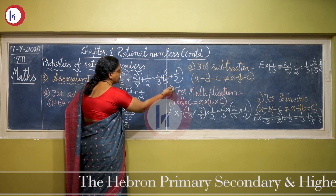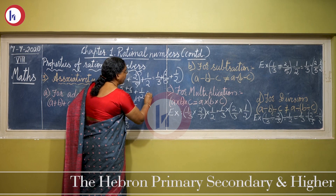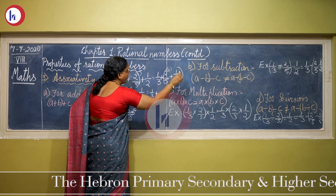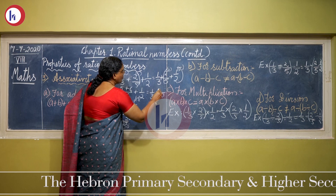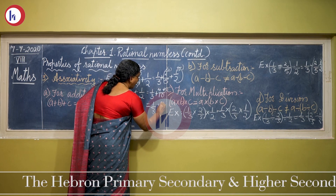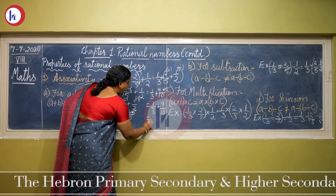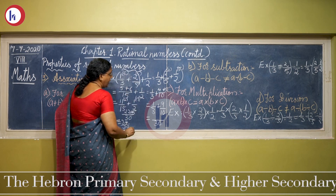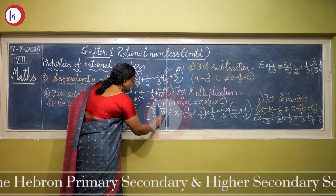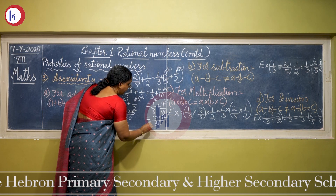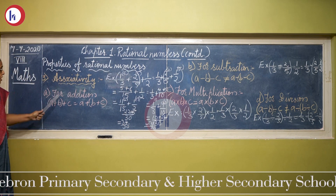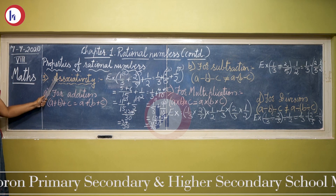Now we verify the other side: 1/3 + (2/5 + 1/2). Finding the LCM of 5 and 2 gives 10. We get 4 + 5 = 9, so 2/5 + 1/2 = 9/10. Then 1/3 + 9/10: LCM of 3 and 10 is 30, giving 10 + 27 = 37/30. Both sides equal 37/30, so rational numbers are associative for addition.